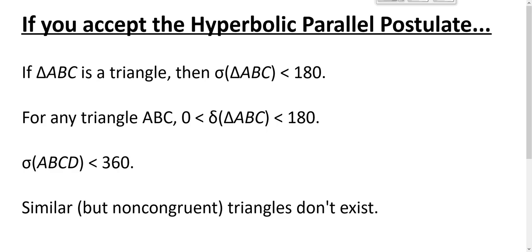Here are some things that are true if you accept the hyperbolic parallel postulate: The sum of the measures of the angles of a triangle is strictly less than 180. There is no triangle in the hyperbolic plane whose angle sum is 180—none. Which means every triangle has a positive defect, and the defect is obviously less than 180. Every quadrilateral has an angle sum less than 360.